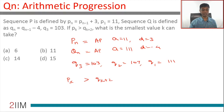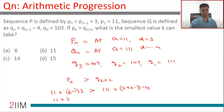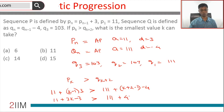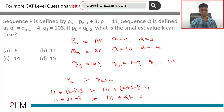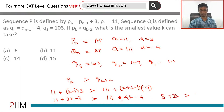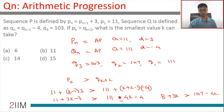Not just the same term, but the kth term versus the (k+2)th term. The kth term of p is 11 plus (k minus 1) into 3. This is greater than 111 plus (k+2 minus 1) into minus 4, which gives 11 plus 3k minus 3 is greater than 111 plus 4k minus 4, simplifying to 8 plus 3k is greater than 107 minus 4k.